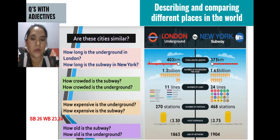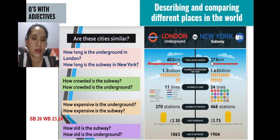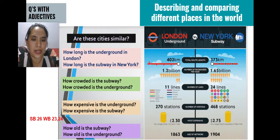My second question — I am asking 'how crowded?' That is my adjective. How crowded is the subway? The subway in New York has 1.65 billion passengers per year, meaning the subway is more crowded than the London Underground. The Underground has 1.2 billion passengers per year, so it is less crowded.